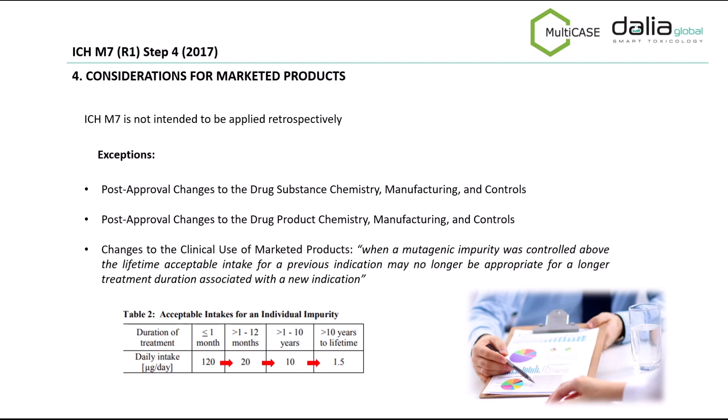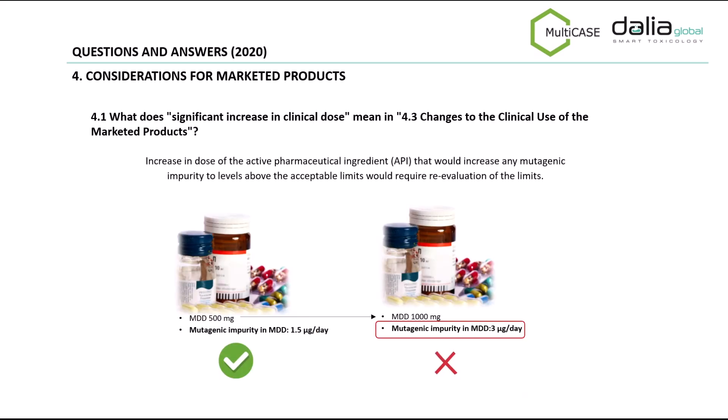Let's continue to section 4. In relation to considerations for marketed products, the first idea to keep in mind is that ICH M7 applies for products marketed before the adoption of this guideline. However, some changes in drug substance or drug product chemistry or manufacturing processes may require further revision through an ICH M7 assessment. Additionally, those mutagenic impurities controlled through less-than-lifetime adjustment, that is with 120, 20 or 10 micrograms per day, may no longer be appropriate if the duration of treatment is extended. Any increase in dose of the active pharmaceutical ingredient that would increase any mutagenic impurity to levels above the acceptable limits is considered significant and should be re-evaluated under an ICH M7 assessment.